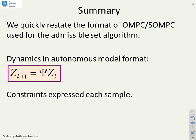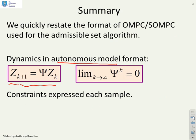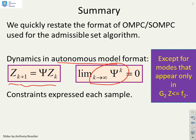First, a summary of what we need to do. We define the dynamics in terms of an autonomous model format, ensuring that the limit as k goes to infinity of phi_k is zero. There is a caveat: you don't actually need to ensure that for the modes which appear in the part of the constraint set that you're not going to iterate.